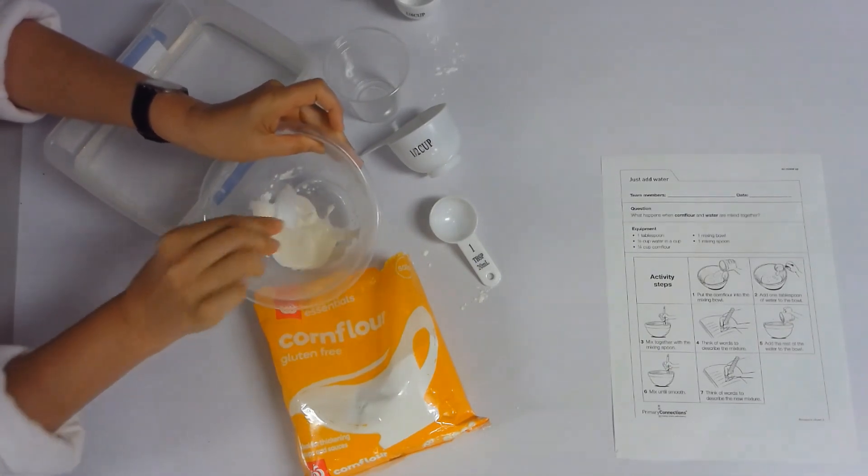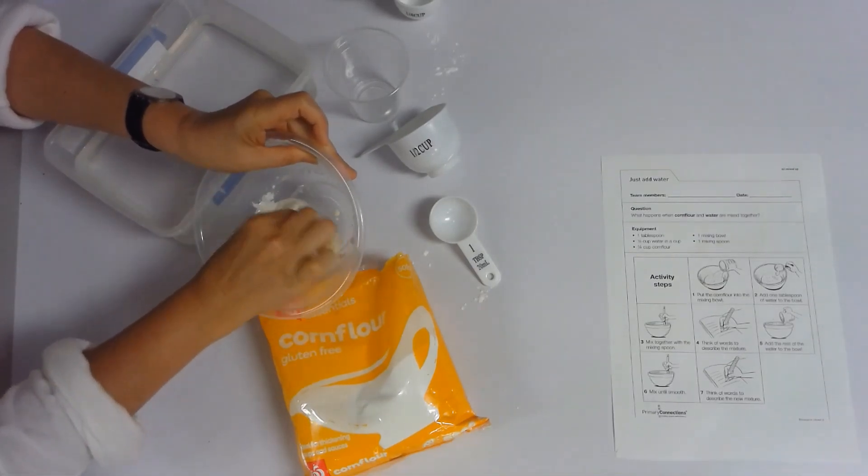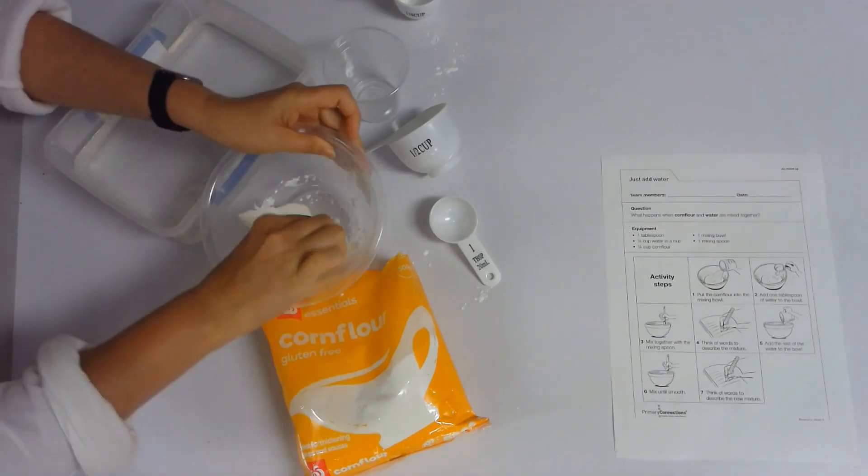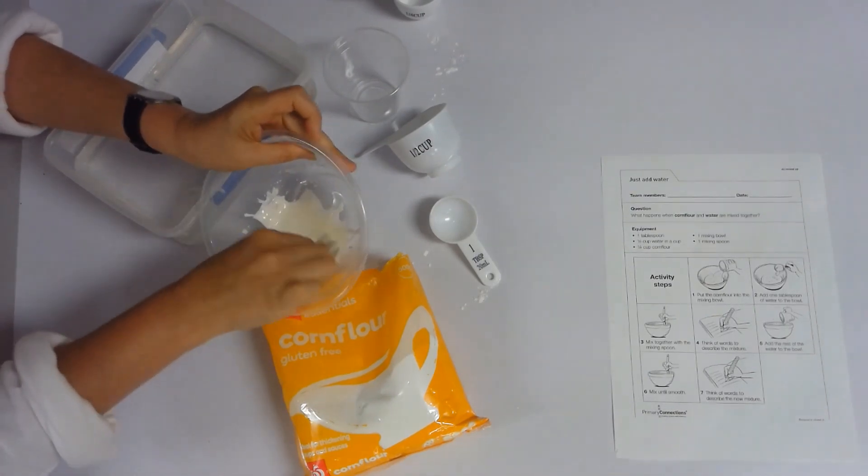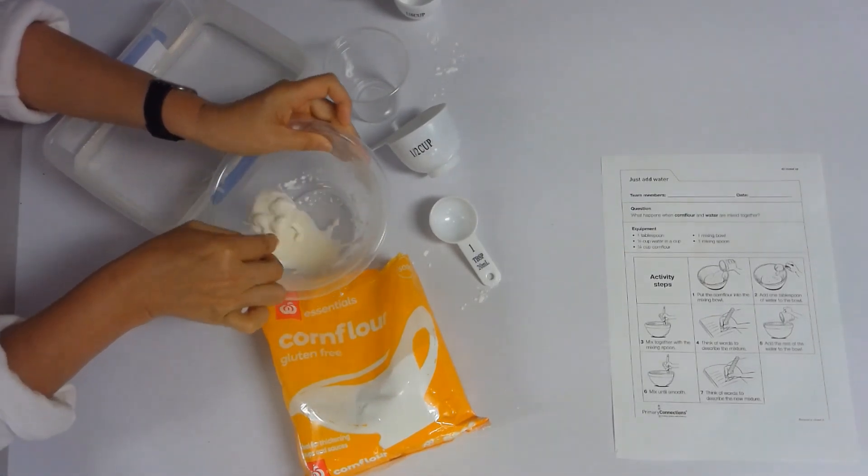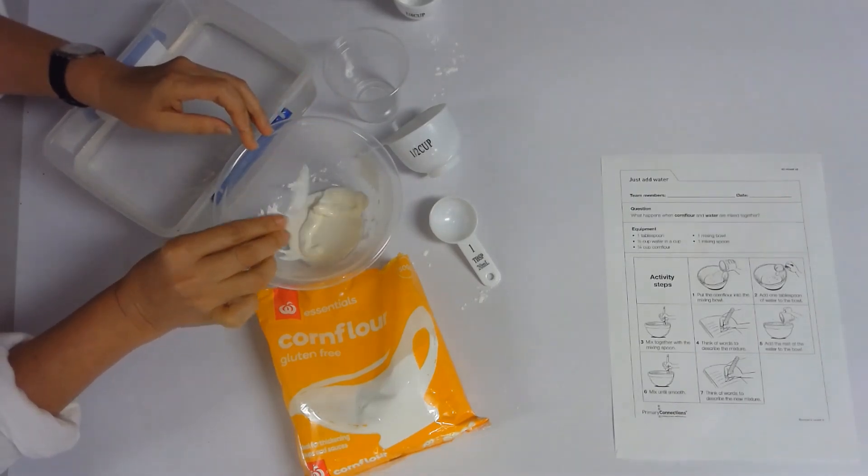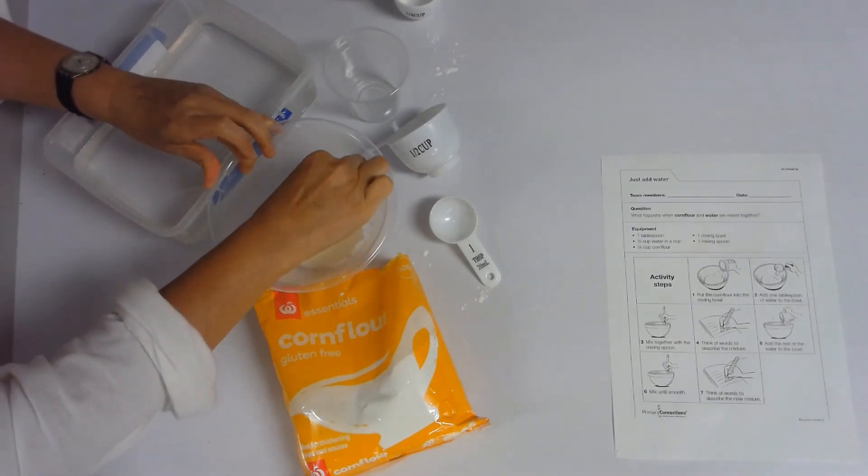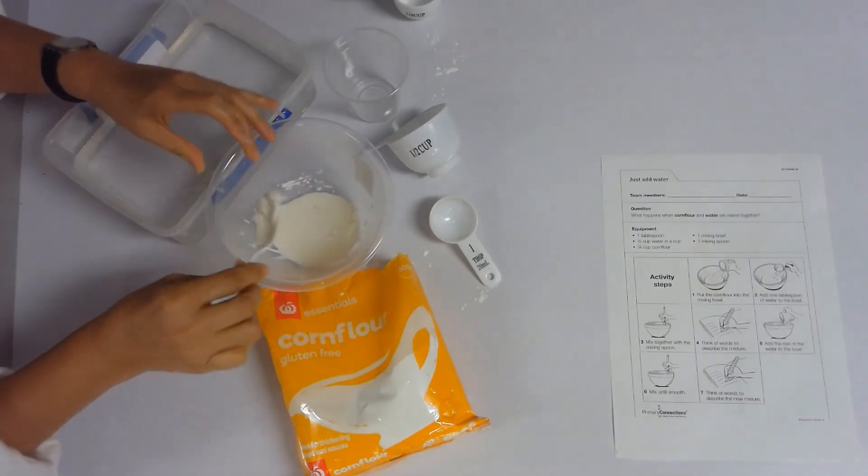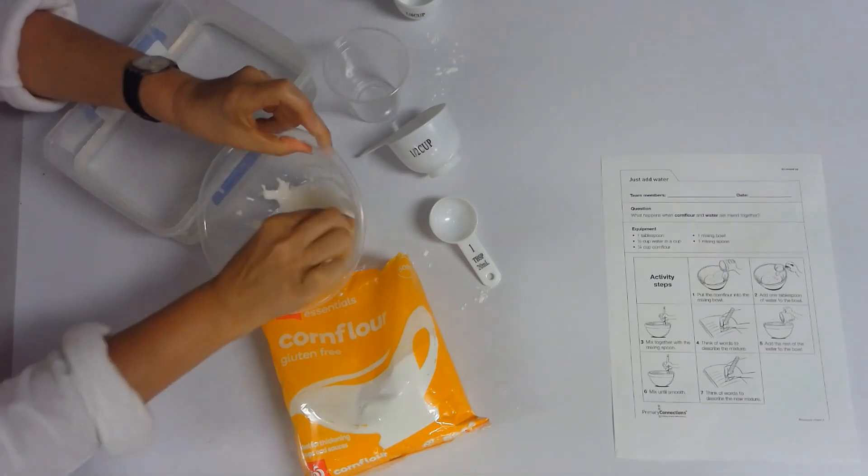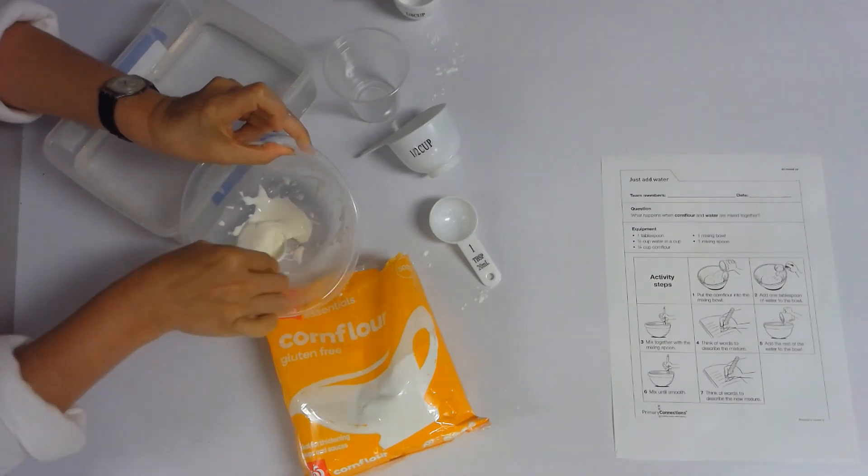So maybe you might need to get a normal silver spoon rather than a plastic one because I think I might crack this one. I wonder what our next step says. Think of words to describe the mixture. Can anyone think of any words that would describe the mixture? If you can think of one, please write it down on your scrapbook or on your piece of paper where you're keeping your scientific journal. To me, it looks smooth, but it does not look tasty. To me, it looks lumpy. To me, it looks a bit sloppy. Yeah, great words.